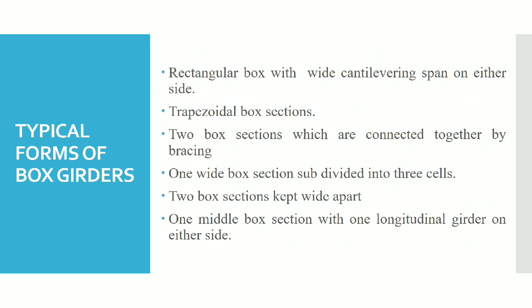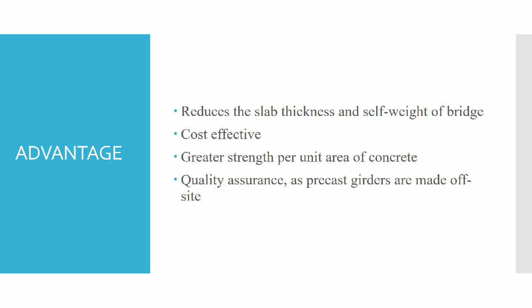Forms of box girders include: rectangular box with wide cantilevering span, trapezoidal box sections, and two box sections connected together by bracings. Advantages include reduced slab thickness, cost effectiveness, and greater strength per unit area of concrete.